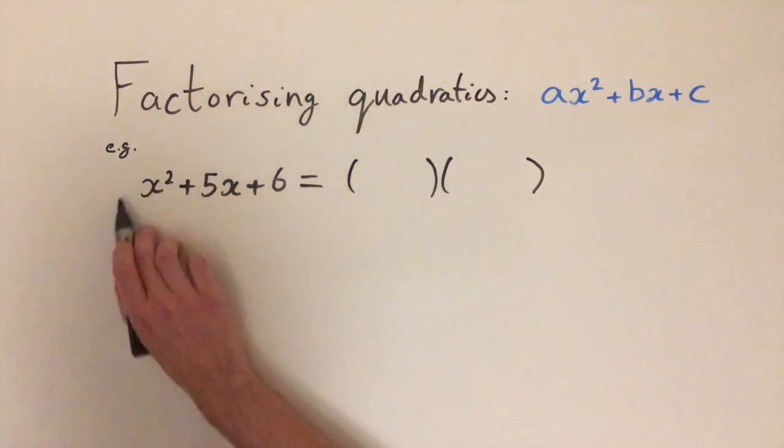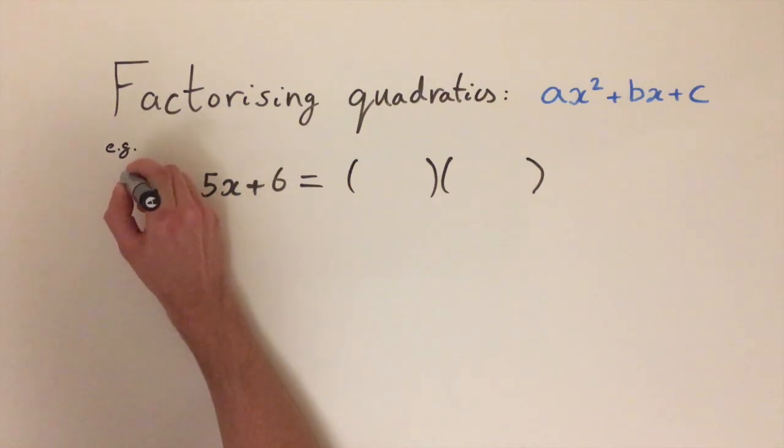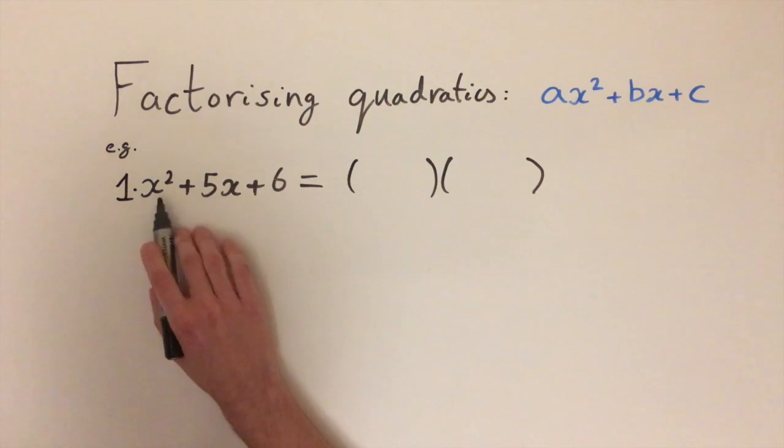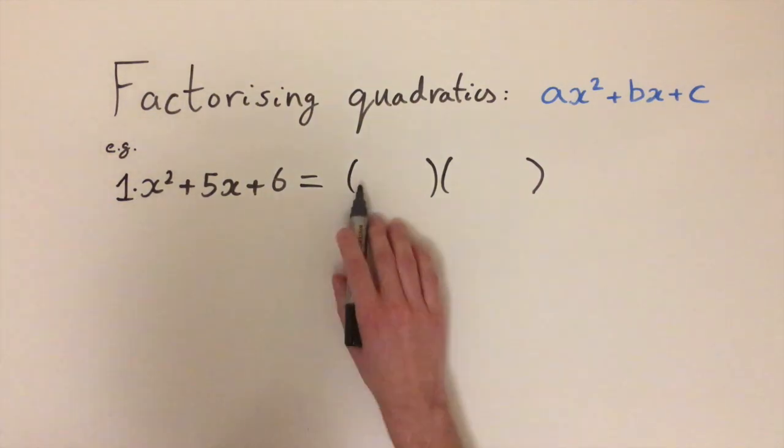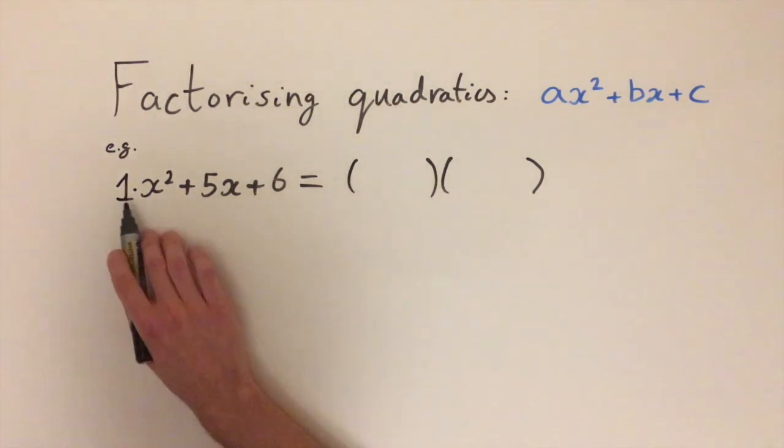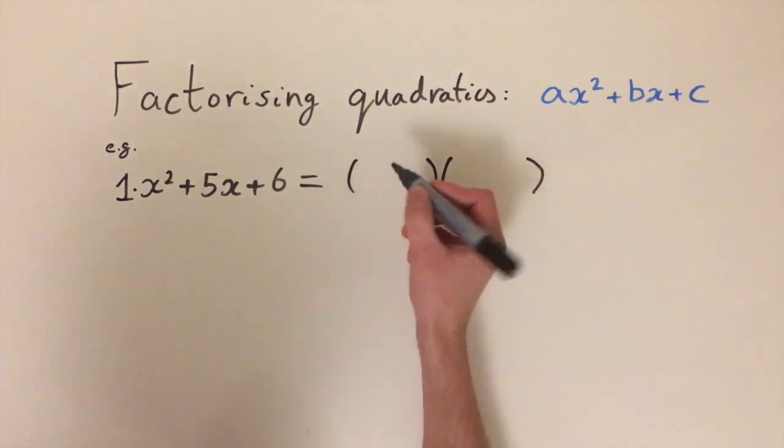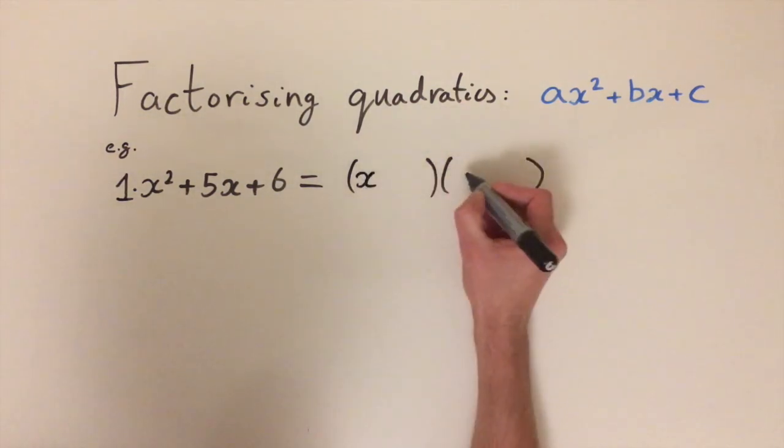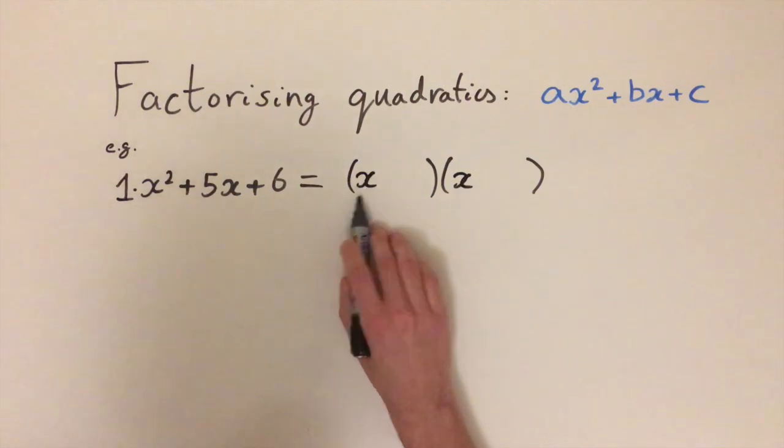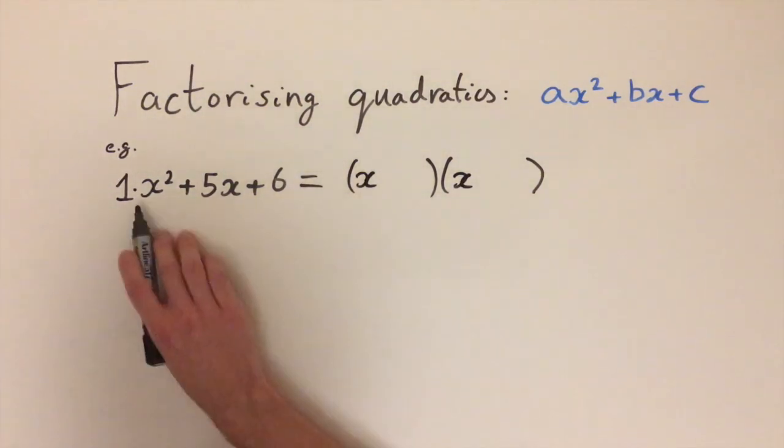The first step is to look at the coefficient of the x squared term. Since there's no number here, we can think of this as having a 1 multiplied by the x squared. So we need to think about what two numbers are going to multiply to give us 1, and that's just 1 and 1. So the first step is to write x and x, because when we multiply these two terms out we're going to get an x squared.